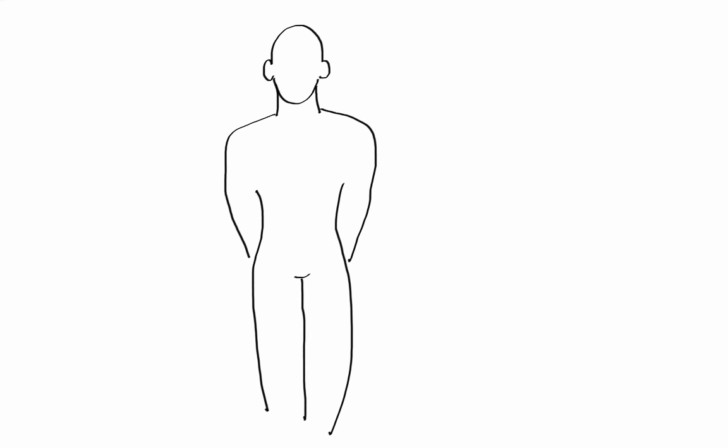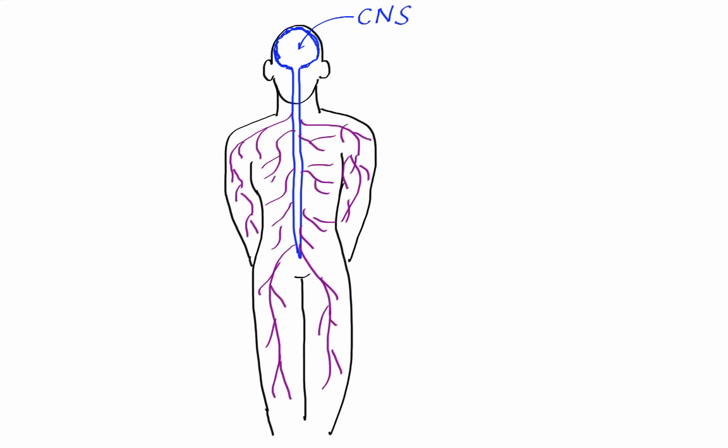It is divided into two anatomical divisions: the central nervous system CNS, which consists of the brain and the spinal cord, and the peripheral nervous system PNS, which consists of all the nerves and neurons outside of the central nervous system.